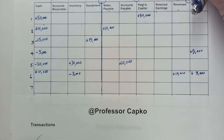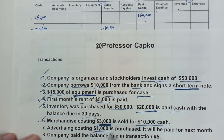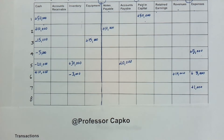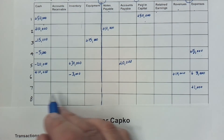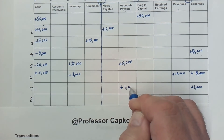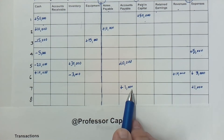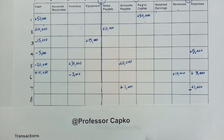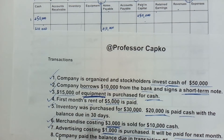Transaction seven: advertising costing $1,000 is purchased and will be paid next month. We're not paying for it now, but we have to expense it today. So expenses increase by $1,000. We didn't pay cash, so cash doesn't get reduced, but we increase accounts payable by $1,000 since we owe it in the future. On the equity side, there's a subtraction sign, so the $1,000 expense reduces equity — it remains in balance.